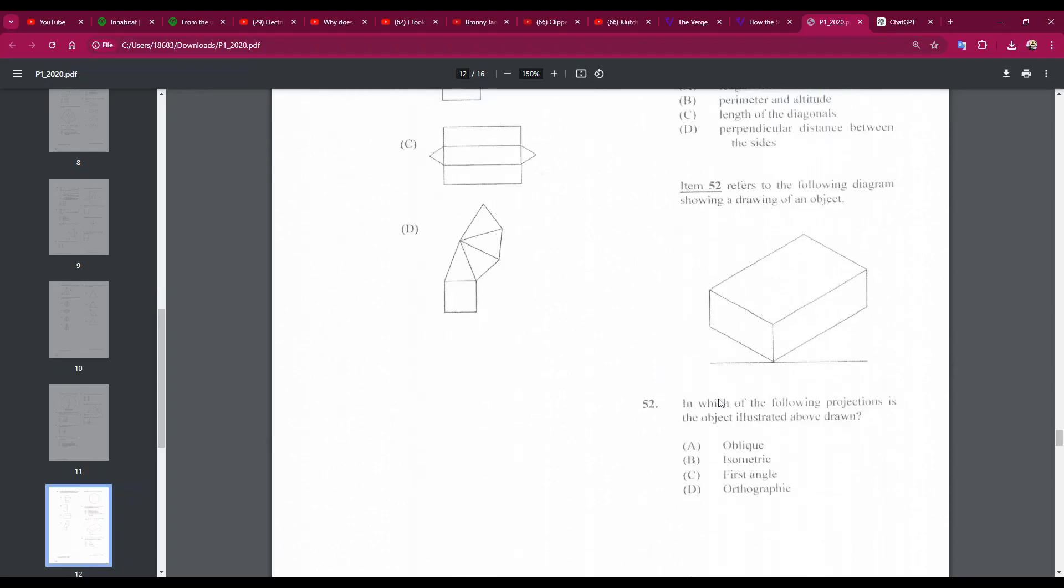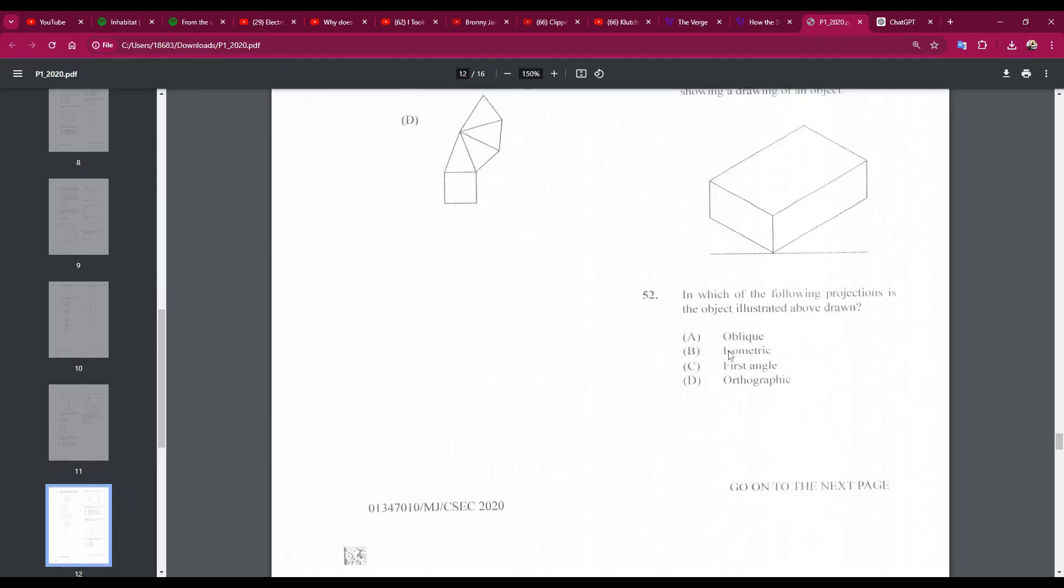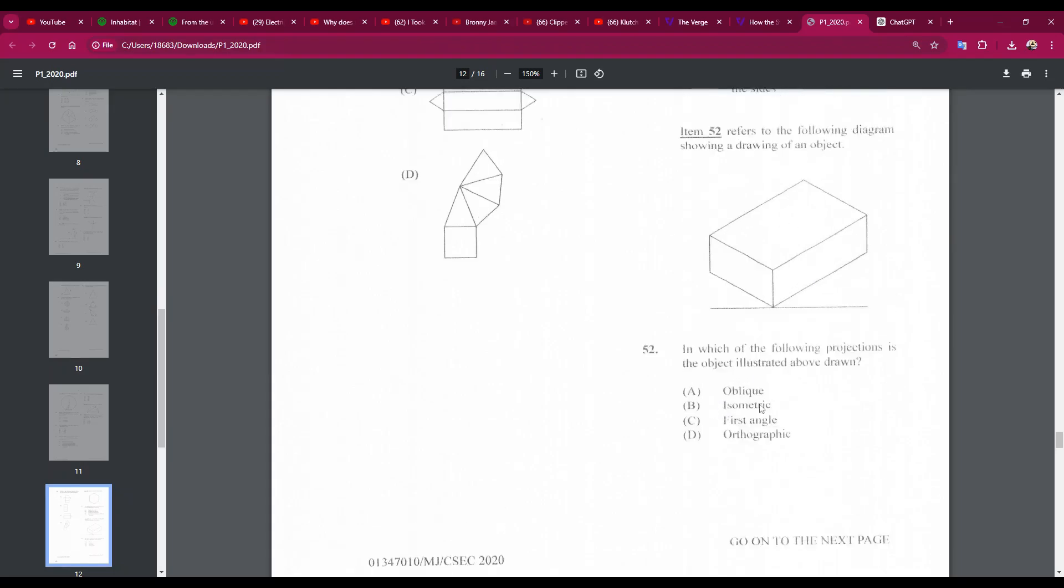Number 52: in which of the following projections is the object illustrated above drawn? Okay, so this is the object. This is an isometric drawing. B, isometric.